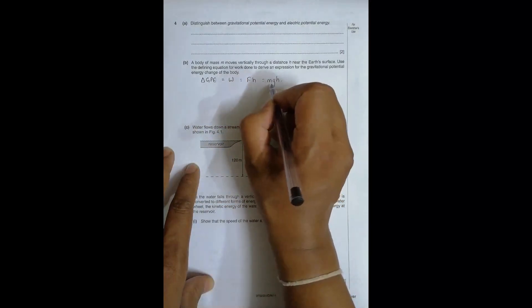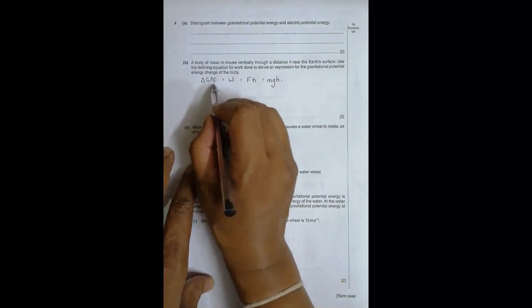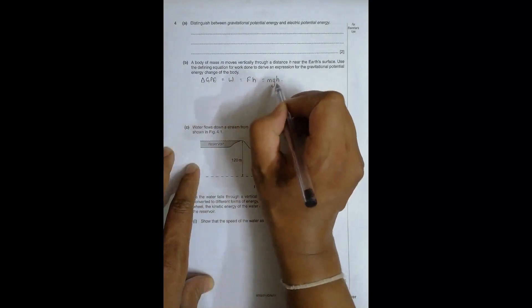So that is equal to force into distance and the force is equal to mg. So the value of gravitational force is equal to mg and so that's why delta GP is equal to mg into the height travelled.